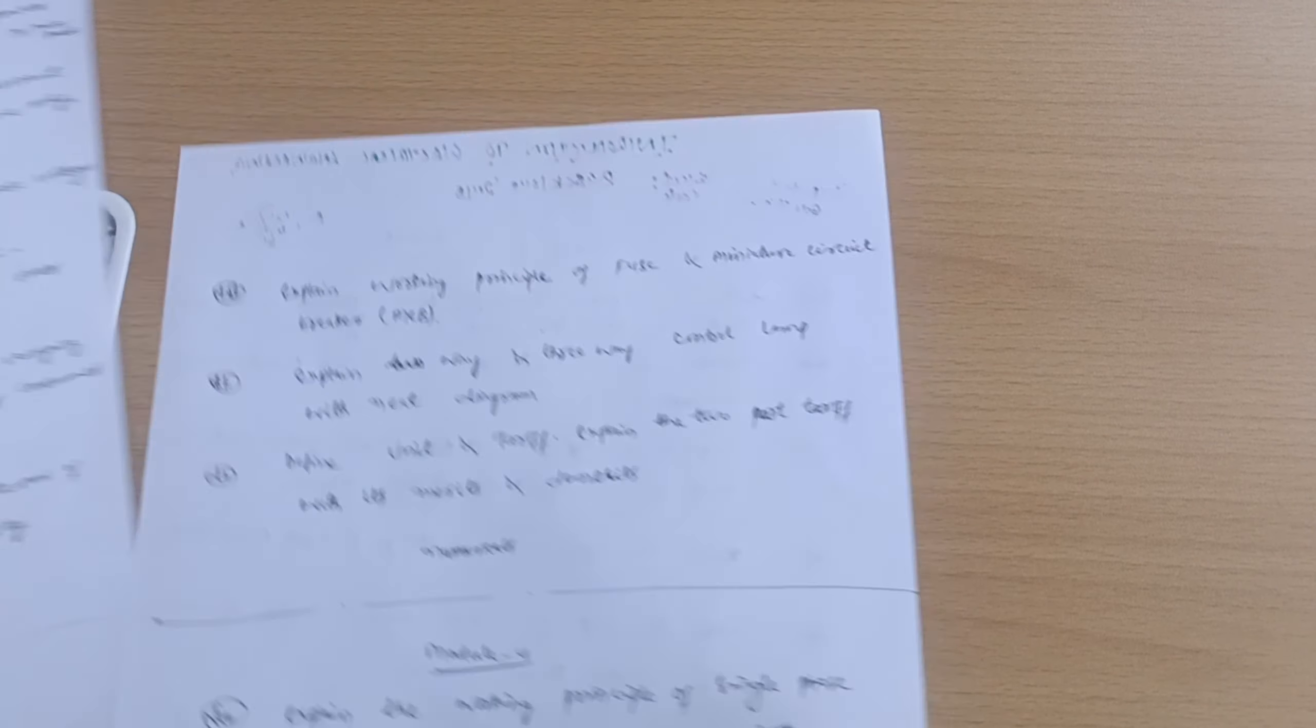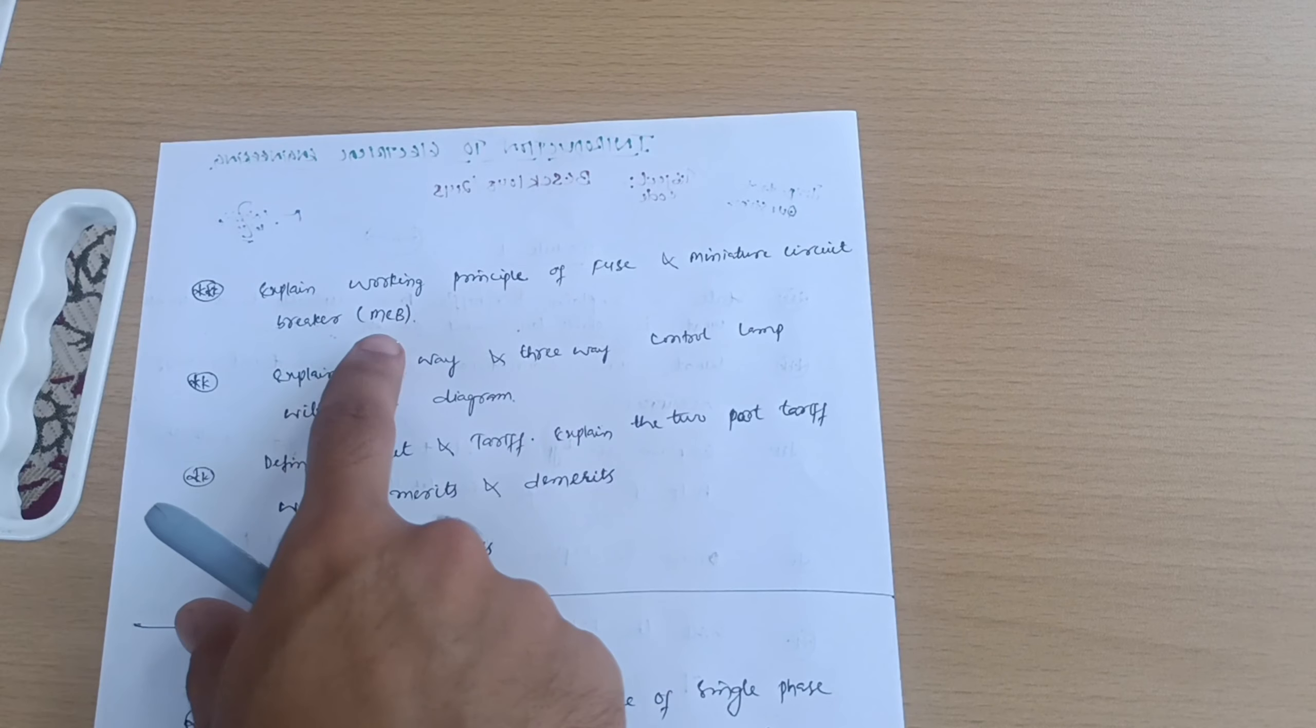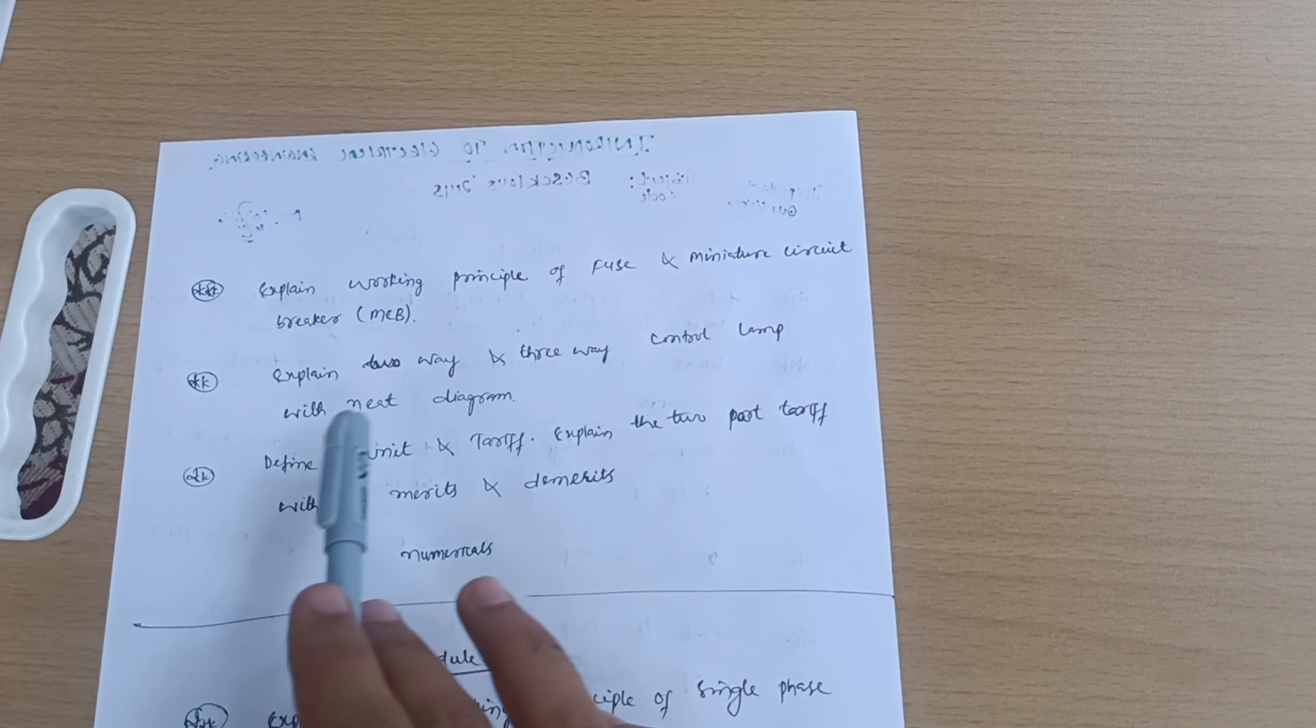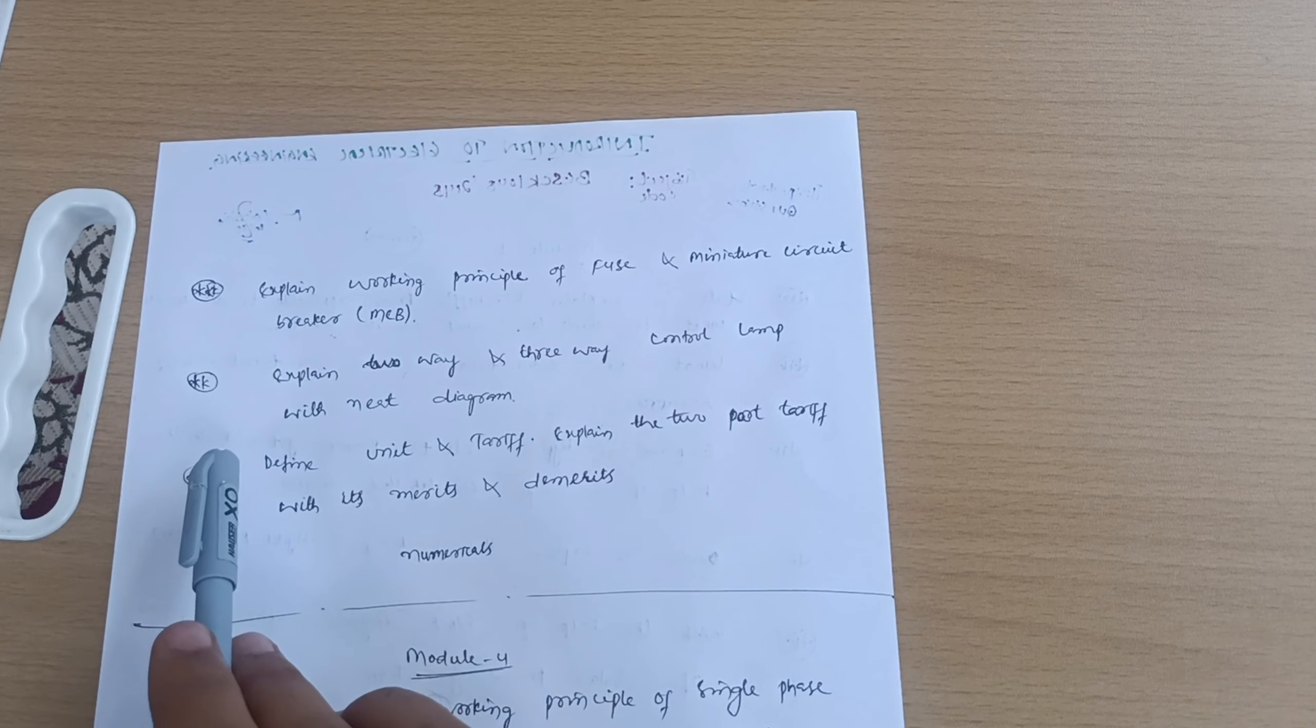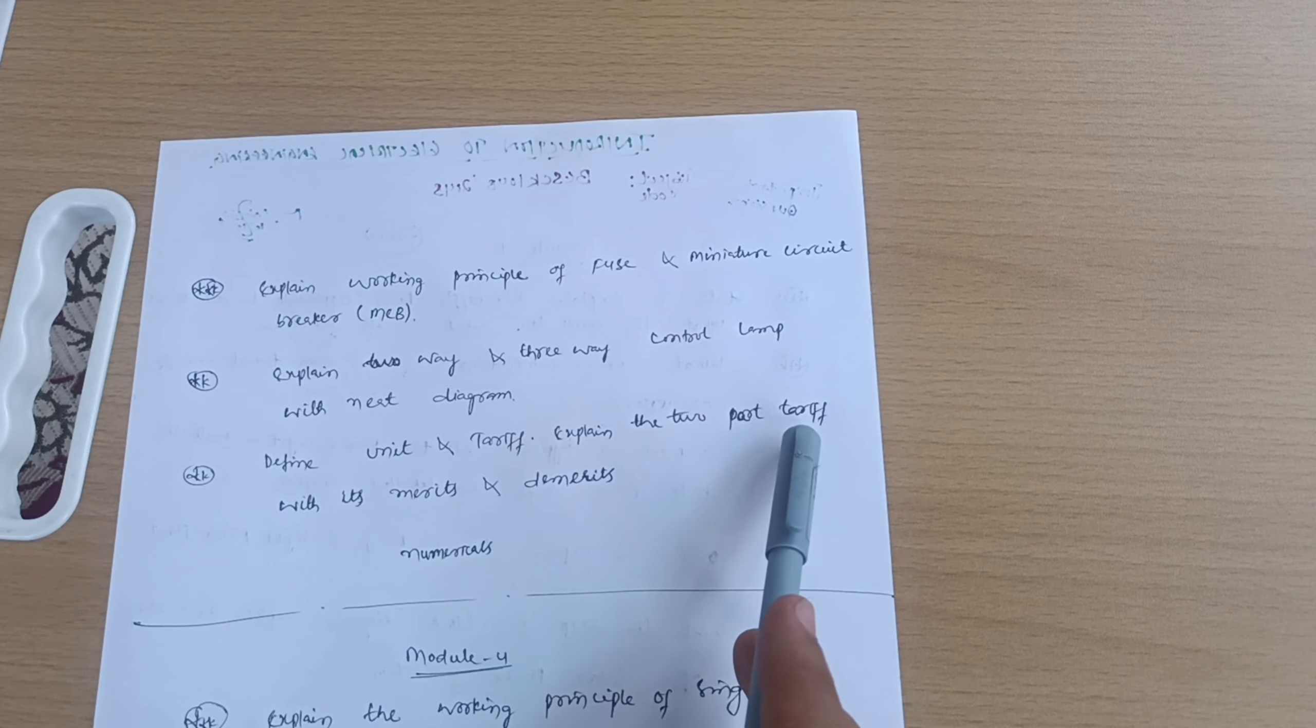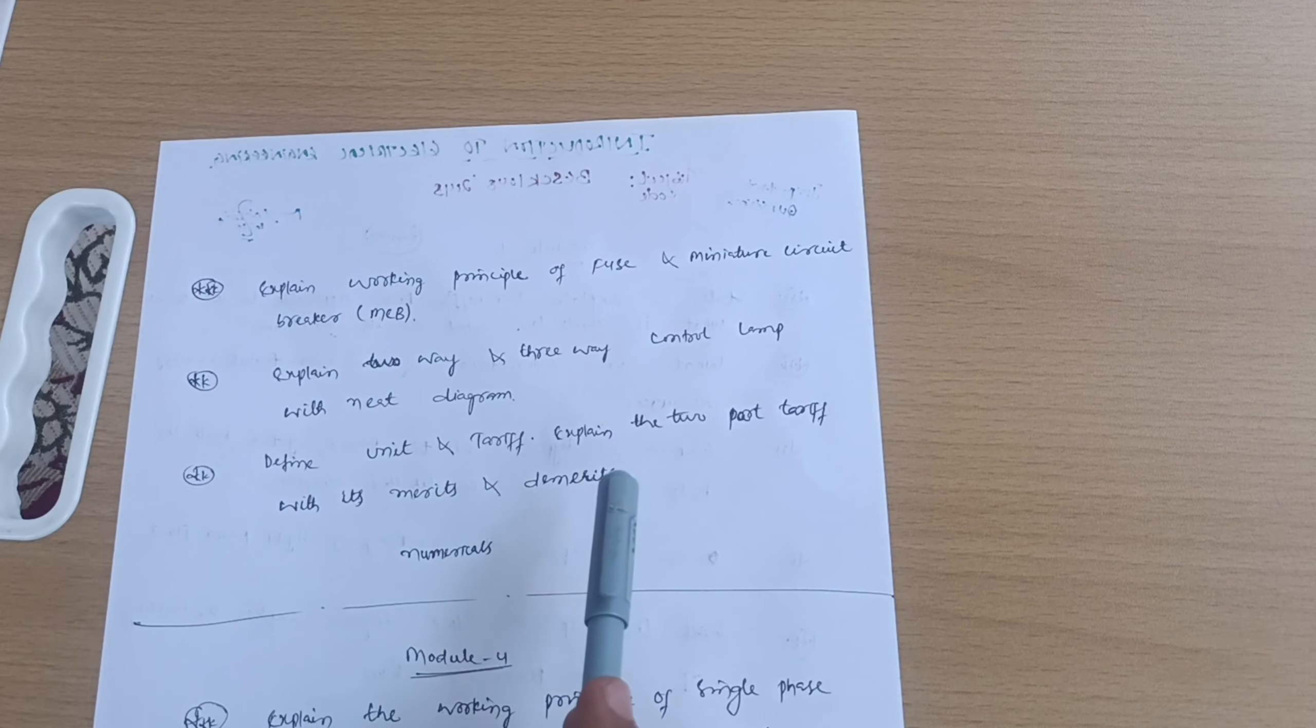Explain working principle of fuse and miniature circuit breaker MCB. Explain two-way and three-way control length with neat diagram. It is a super important question. Define unit and tariff. Explain the two-part tariff with its merits and demerits. Go through the numerical parts which are very simpler ones.